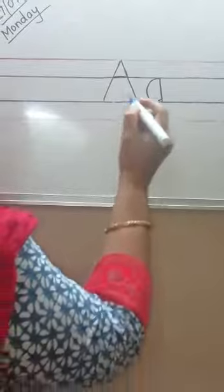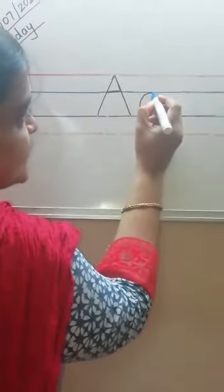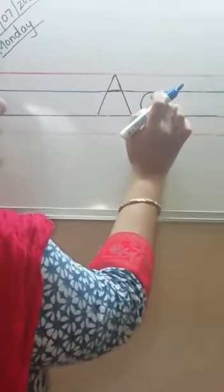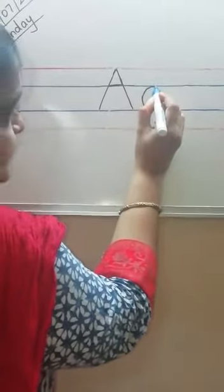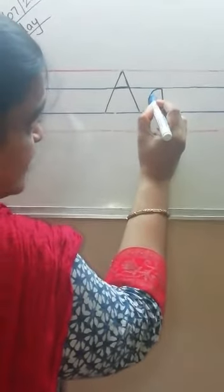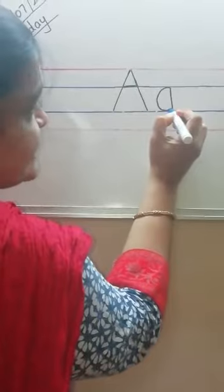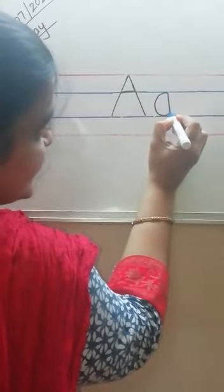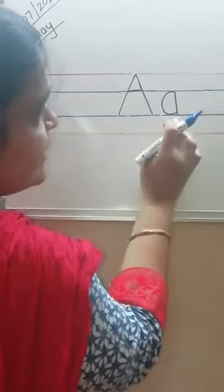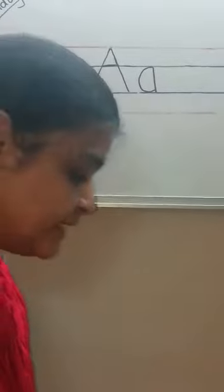Now, how do we write small a? That is the sound of A. We will start from the blue line — we are not starting from the red line. We start with the blue line and make a curve. Then we go up and make a straight line, stopping at the blue line. Remember, children, you have to be careful with the lines.